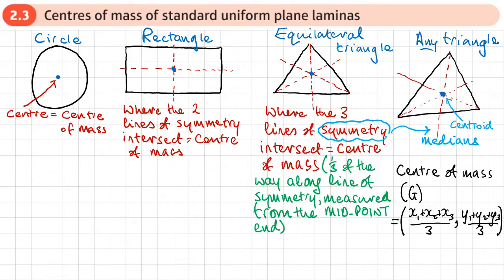Now we're going to move on to triangles, starting with an equilateral triangle. I've drawn in the lines of symmetry of an equilateral triangle and they all cross at a point called the centroid of the triangle. This is where the center of mass is — where the three lines of symmetry intersect, there we've got the center of mass.